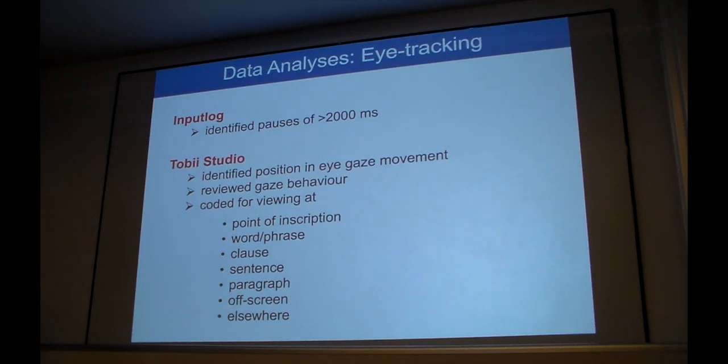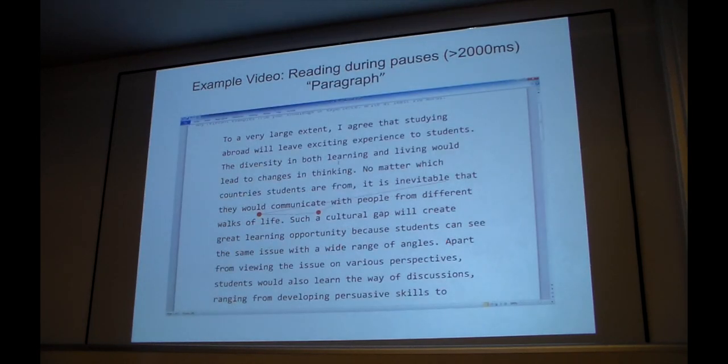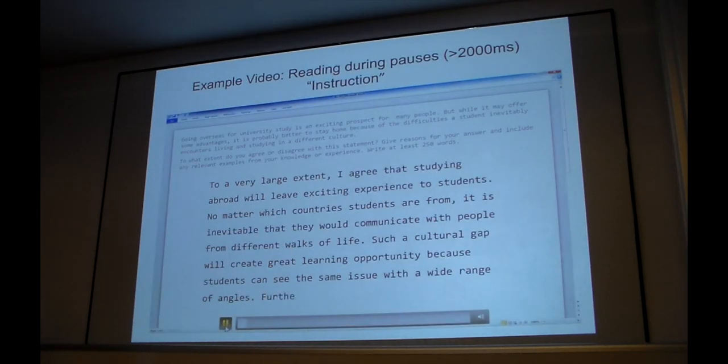When it comes to eye tracking, what we did first, we identified pauses in the keystroke logging software. Our pause threshold was 2 seconds. And then we looked for the same location in the eye tracking data, and we looked at the gaze behaviors during the pause. Whether participants stayed at the point of inscription when they were writing, whether they looked at the previous word they've just written, the previous clause, sentence, paragraph, they looked somewhere off-screen or elsewhere. Let me show you a few examples. So here's a pause, and then the participant looks back in the previous sentence in this case. Remember, if we didn't have eye tracking, we could just be guessing where they were looking. So it was really nice to triangulate these various data sources. In this case, the participant goes back in the previous paragraph during the pause, just rereading part of it. And one more, when the participant looks at the instruction, then there is the pause, and also goes back in the paragraph a bit.